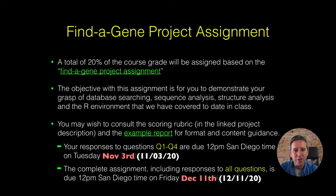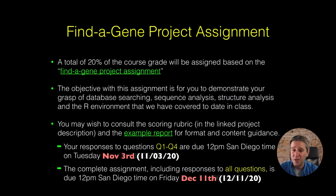The reason for the early deadline is that these first four questions, in ideal circumstances, can be done pretty quickly — 30 to 40 minutes max. You can do these first four questions and find a gene that's novel, something that we'll then explore in the following six questions and put some more meat on the bones.